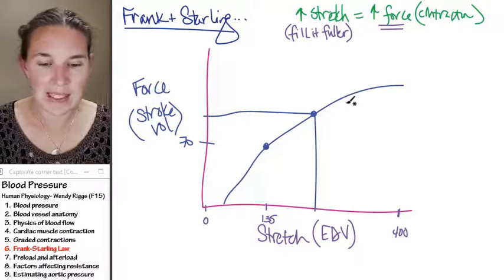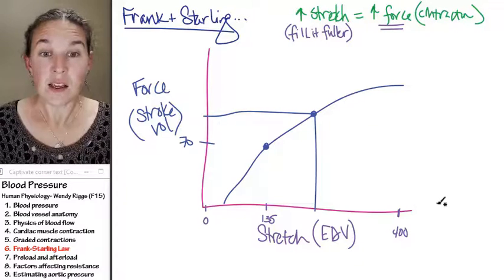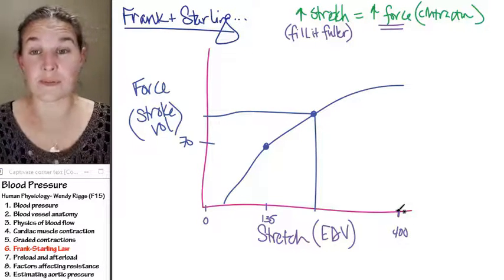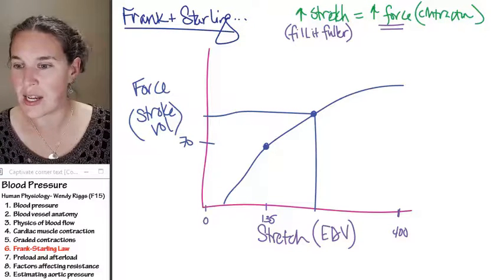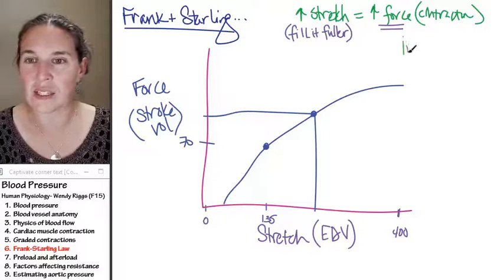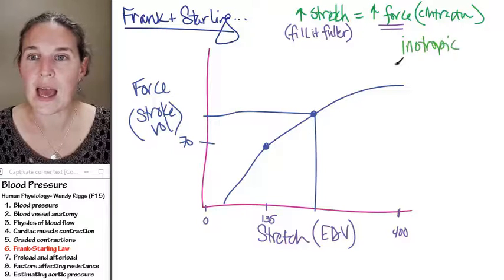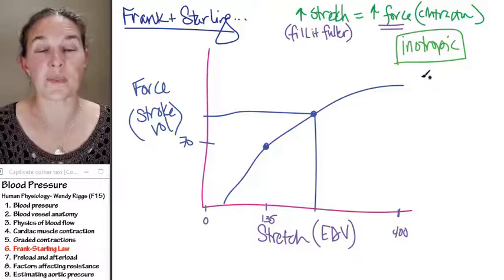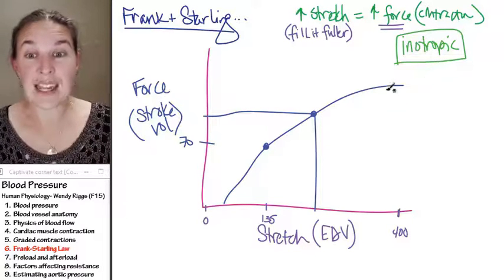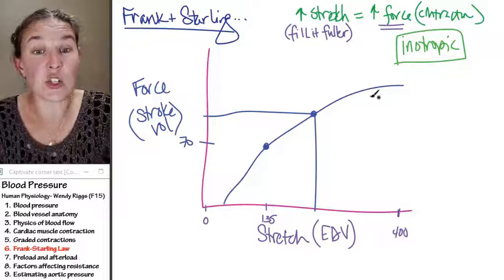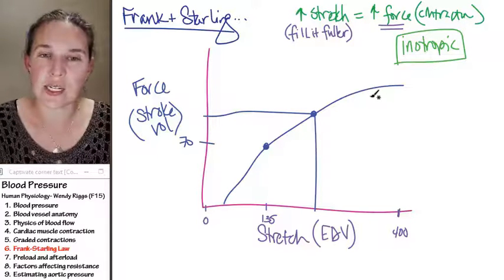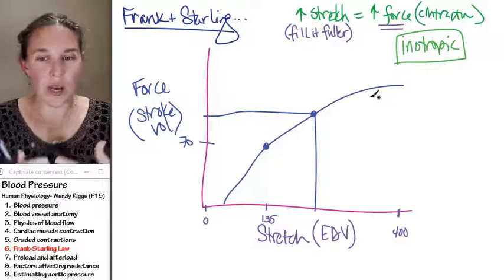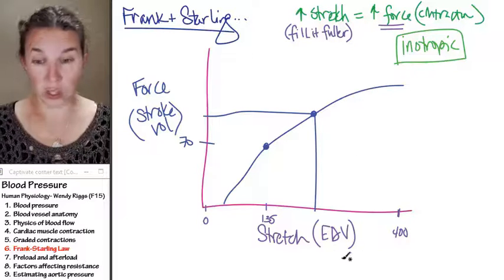If you have a substance that increases the strength of the contraction, if you can increase the force of the contraction, that substance is called inotropic. Inotropic substances increase the force of contraction, and we can see that one of the ways to increase the force of contraction is to increase the end diastolic volume. If you have a greater end diastolic volume, that will increase the force.